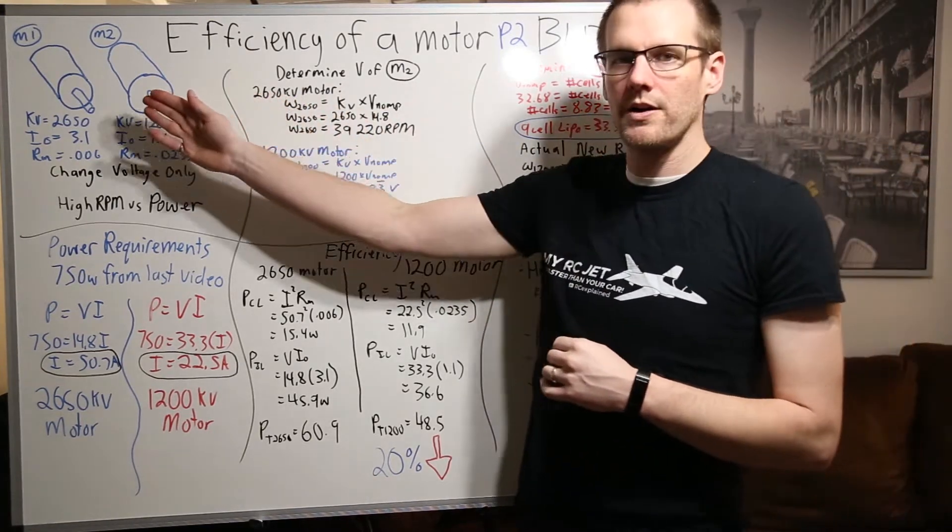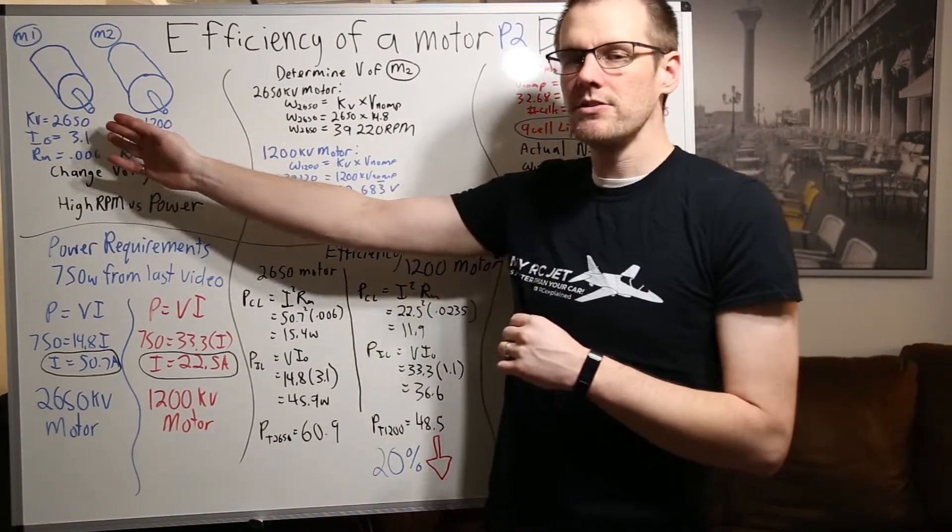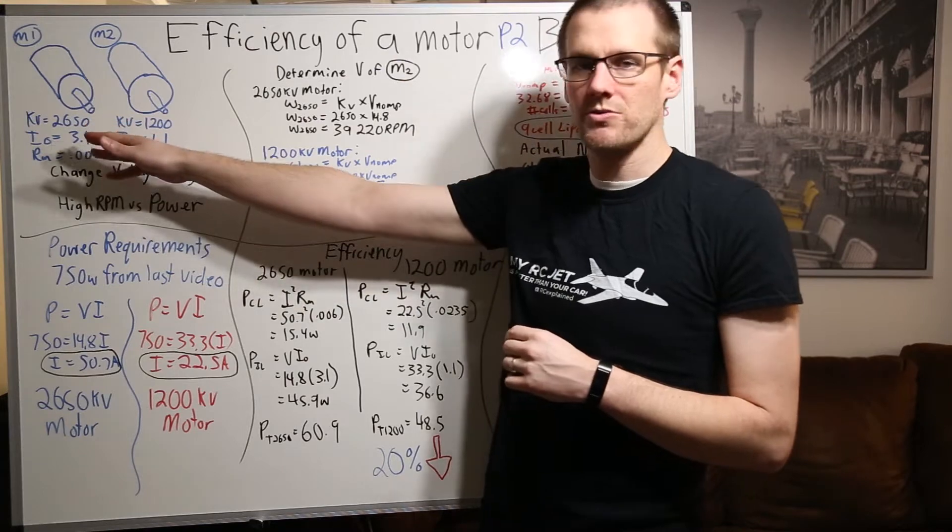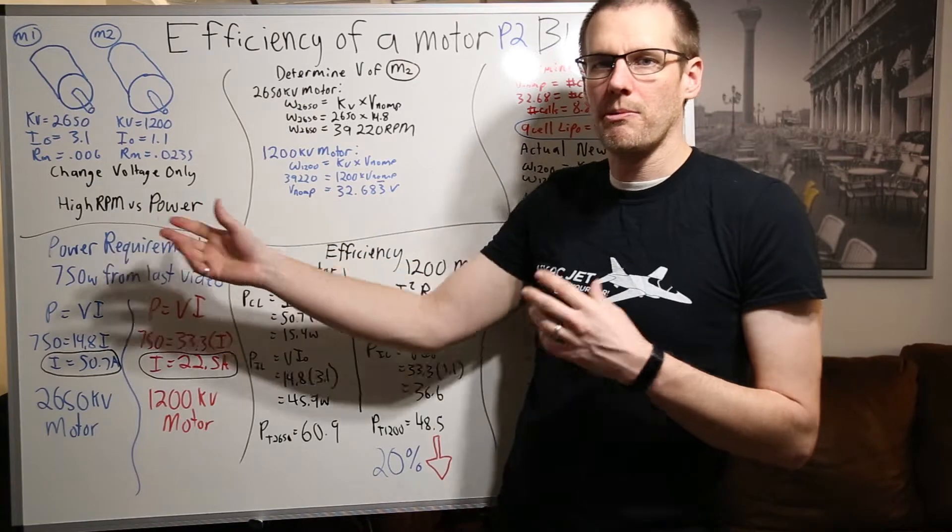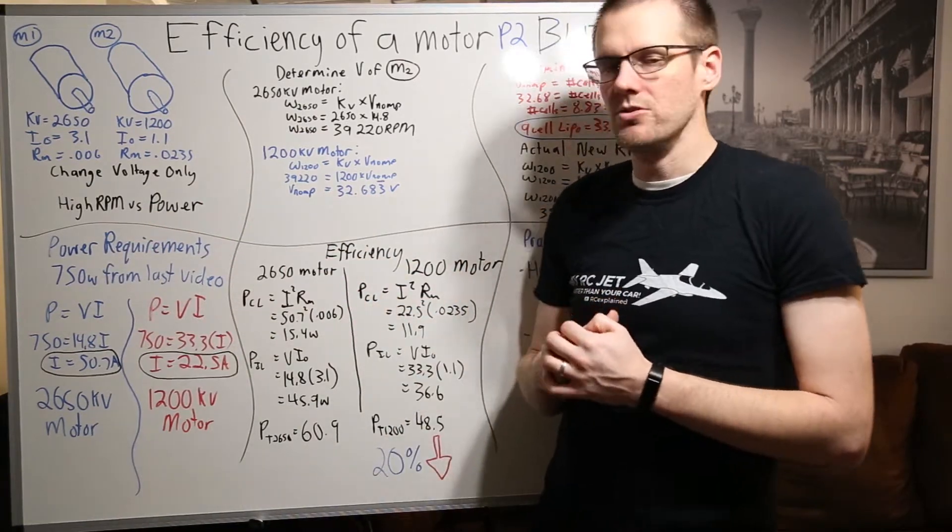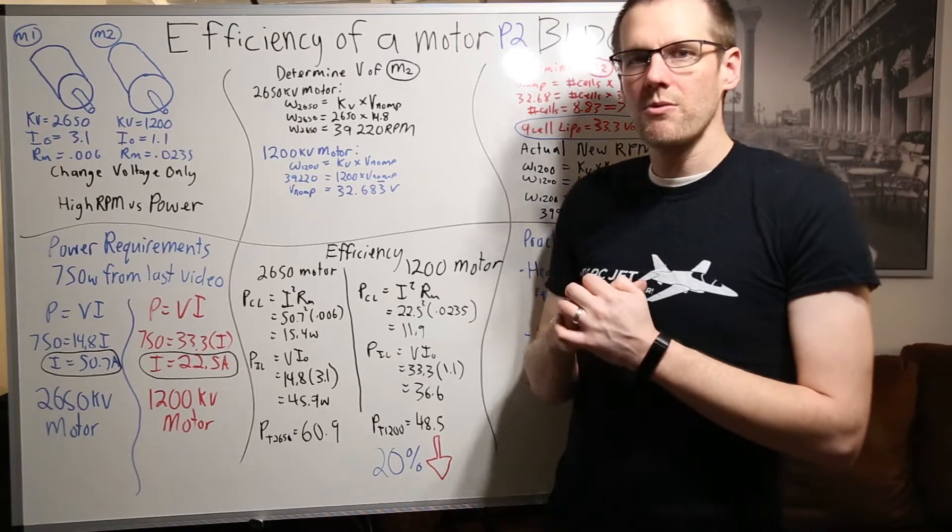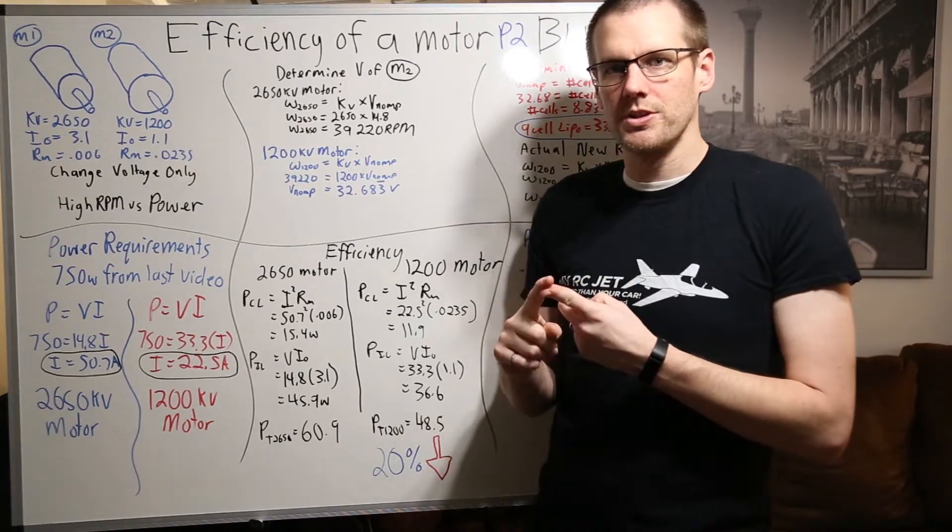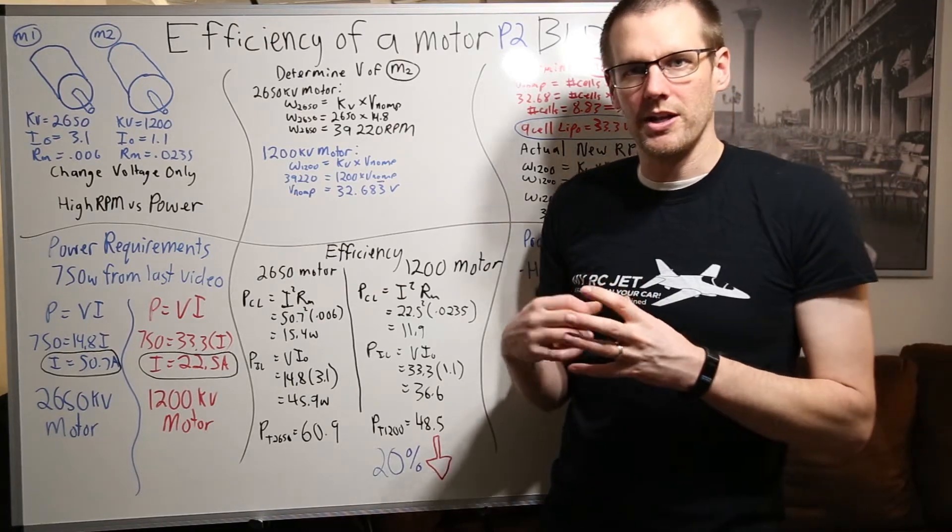We're going to compare motor one up against motor two much like we did in the last video. Identical specifications here that is in blue, the 2650 kV versus our 1200. We also have an IO value there and an RM value pulled from the specifications used in the last video. Now the big difference within this video is that we're going to change the voltage only of our system. We're not going to be touching the gear ratio of our radio control car.